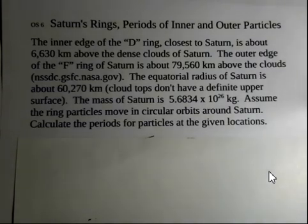This does not cover all the rings of Saturn, but the ones that are notable, one close to Saturn and one further away. The D-ring, the main rings are labeled with letters, is about 6,630 kilometers above the dense clouds of Saturn. And the outer edge of the F-ring is about 79,560 kilometers above the clouds.